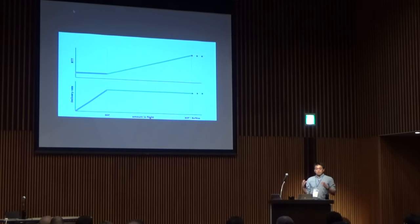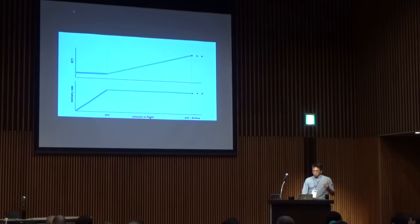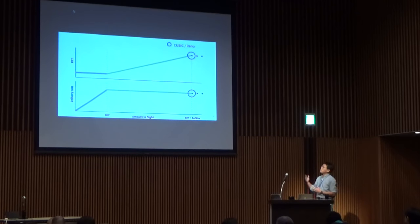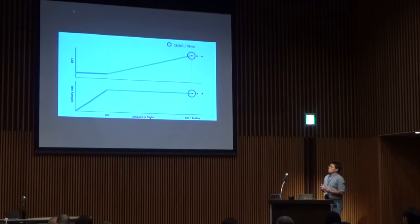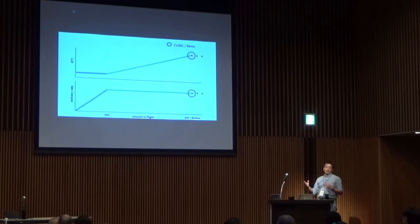People have heard about BBR, but first let's look at how the current default — cubic or Reno, the loss-based congestion control — works. They work at the region where packet loss is the signal, and they react to that. The problem is that the operating point is on the far right edge of the buffer, when you reach the buffer size, and then it takes some action to try to keep congestion low.